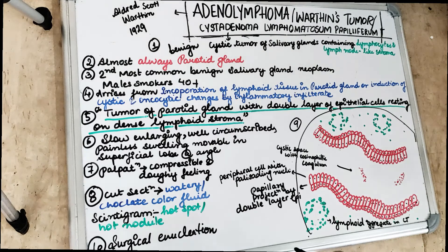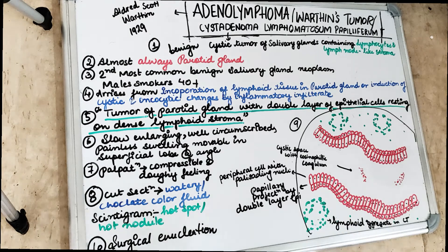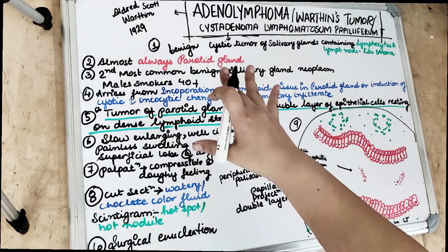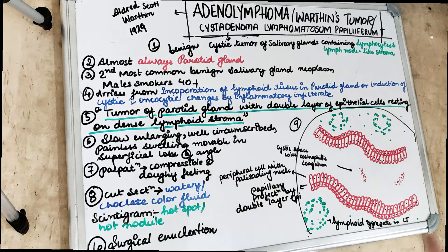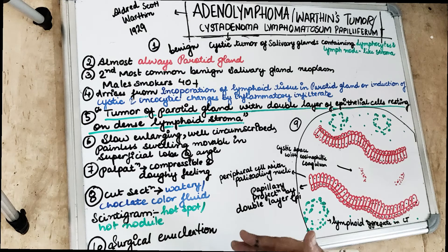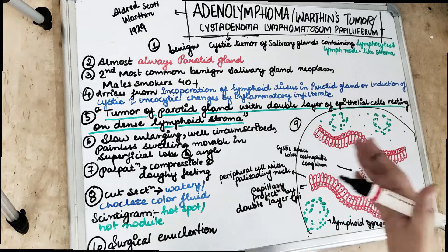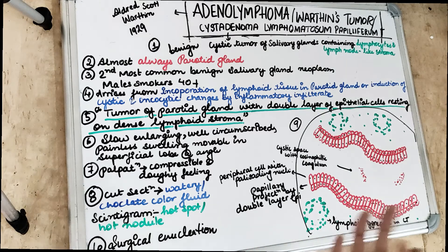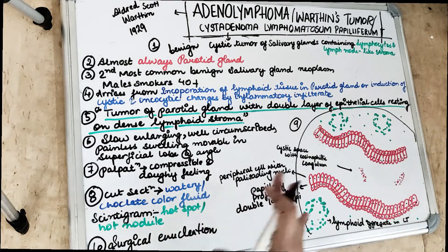Adenolymphoma, also known as Warthin's tumor, is named after pathologist Alfred Scott Warthin, who first examined its pathological sections. The full name is adenolymphoma, cystadenoma lymphomatosum papilliferum — meaning there is going to be a cyst as well as a benign tumor. It involves the parotid gland almost always, with incorporation of lymphoid tissue or induction of cystic and oncocystic changes by lymphocytes in the connective tissue stroma. It is a parotid gland tumor with a double layer of epithelial cells resting on a dense lymphoid stroma.